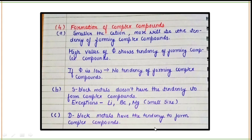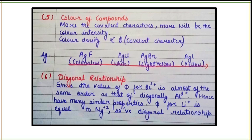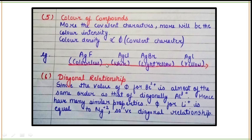The next application is the color of compounds. As the value of phi increases, covalent character increases, and if covalent character increases, the color intensity of the compound also increases. More covalent character means more color intensity — color density is directly proportional to the value of phi (ionic potential). For example, moving along the series AgF, AgCl, AgBr, AgI — AgF is colorless, and moving towards AgI, the color intensity of the compounds increases, going from colorless to white, then light yellow, then yellow.